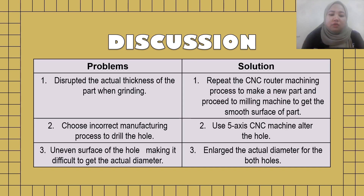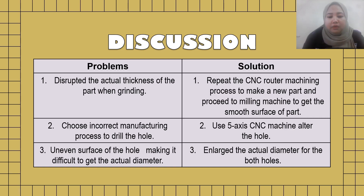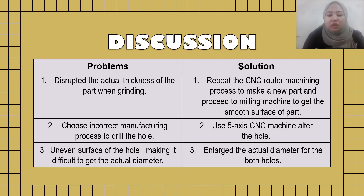Furthermore, we initially chose an incorrect manufacturing process — hand drilling — which could not achieve the correct diameter and caused an uneven round surface. We decided to use 5-axis CNC machining to overcome this problem and altered the holes using it to achieve the correct diameter. However, to get precise roundness, the hole diameters had to be enlarged. The actual diameter of the big hole was 38mm and was enlarged to 40mm, while the actual diameter of the small hole was 22mm and enlarged to 23mm.